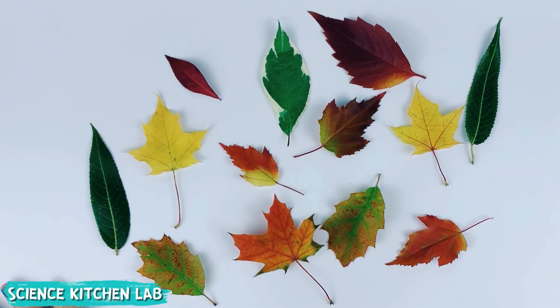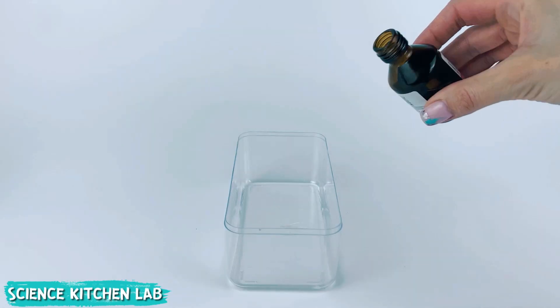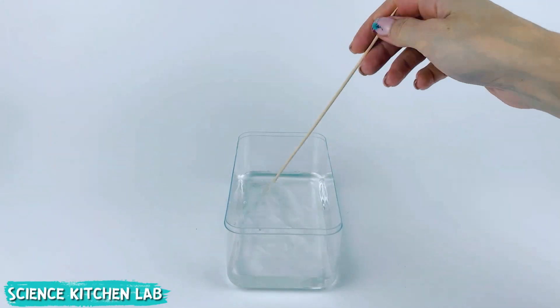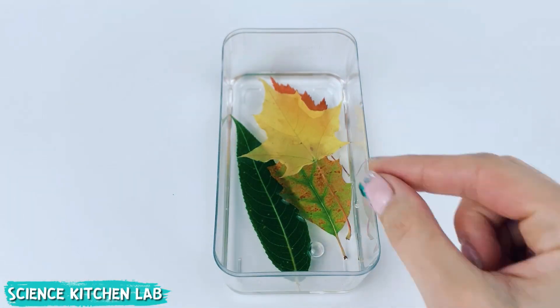We collect beautiful autumn leaves. In a container we mix one part glycerin with two parts hot water. Mix thoroughly. Carefully place the leaves in the container and press them down with any object if they float.